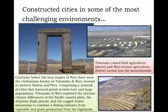Native peoples of South America constructed cities in some of the most challenging natural environments. Centuries before the Inca Empire of Peru, there were the civilizations known as Tiwanaku and Huari, located in western Bolivia and Peru — comprising a network of cities featuring grand architecture and large populations. Tiwanaku and Huari exploited the extreme climate differences of the Pacific Coastal Plain, the Altiplano or High Plains, and the rugged Andes Mountains, combining a fishing industry with fruit, vegetable, and grain production from the highlands. Here's a picture of the Tiwanaku system of raised field agriculture — essentially a flood plain, until the Tiwanaku created raised terraces and channeled runoff from the Andes to create one of the most remarkable agricultural systems in the world.